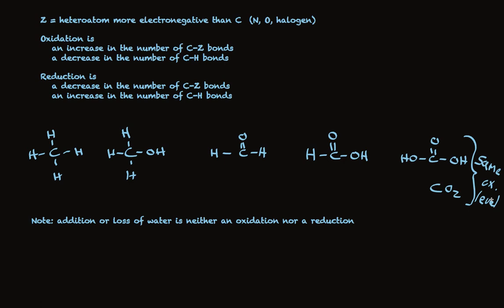Oxidation reduction in organic reactions is simply a matter of changing the number of C-Z bonds and or the number of C-H bonds. Applying one or the other of these definitions to each example will let you determine precisely whether an oxidation or reduction has happened.